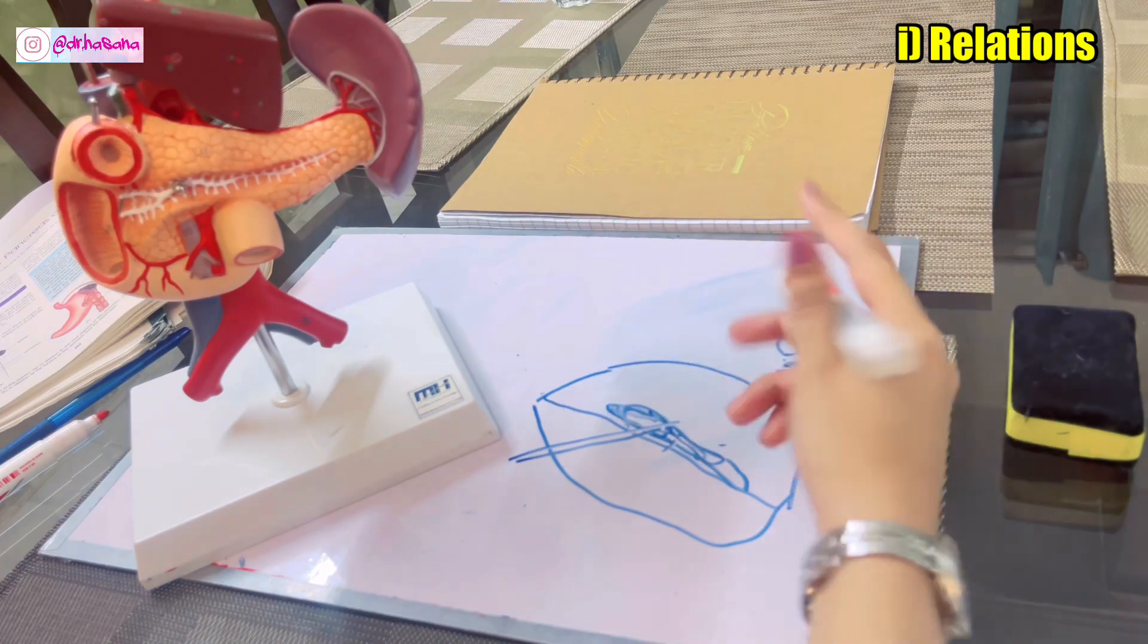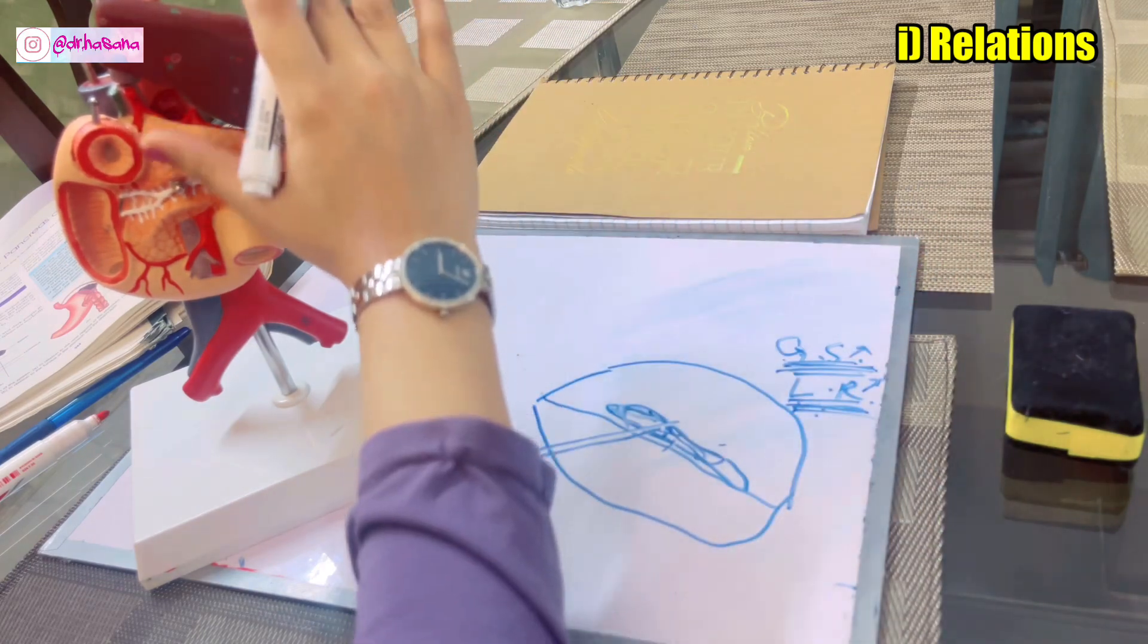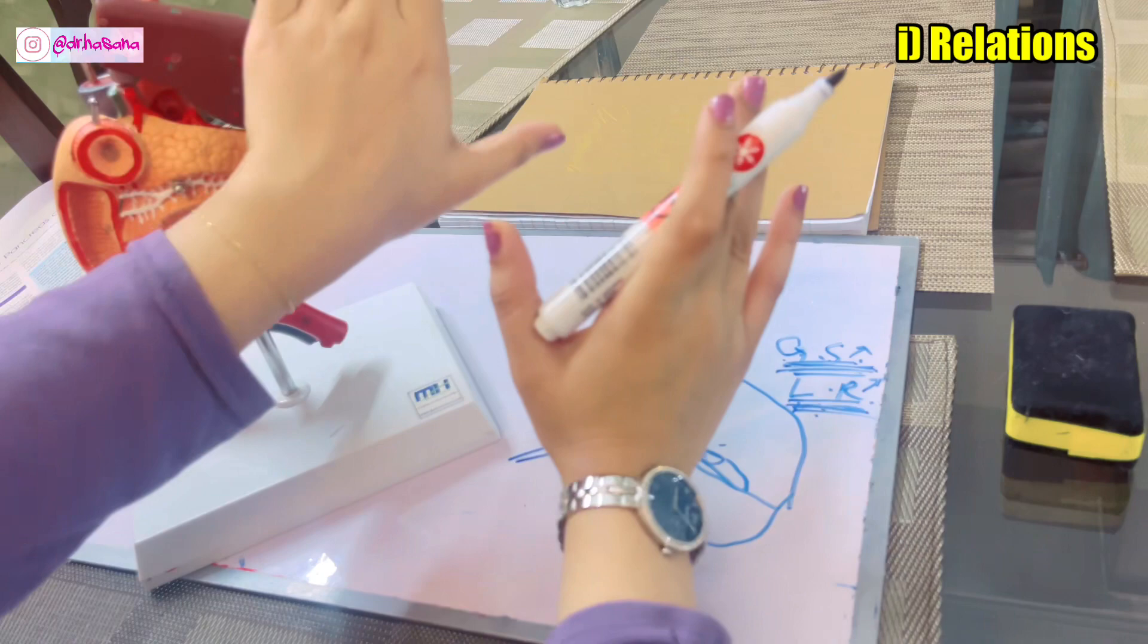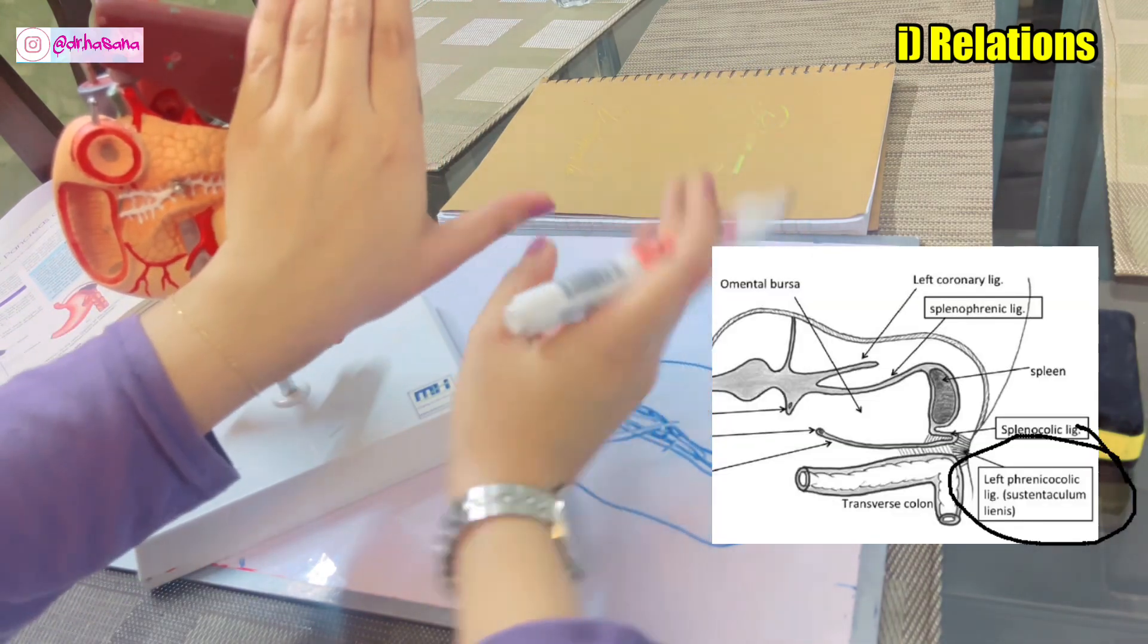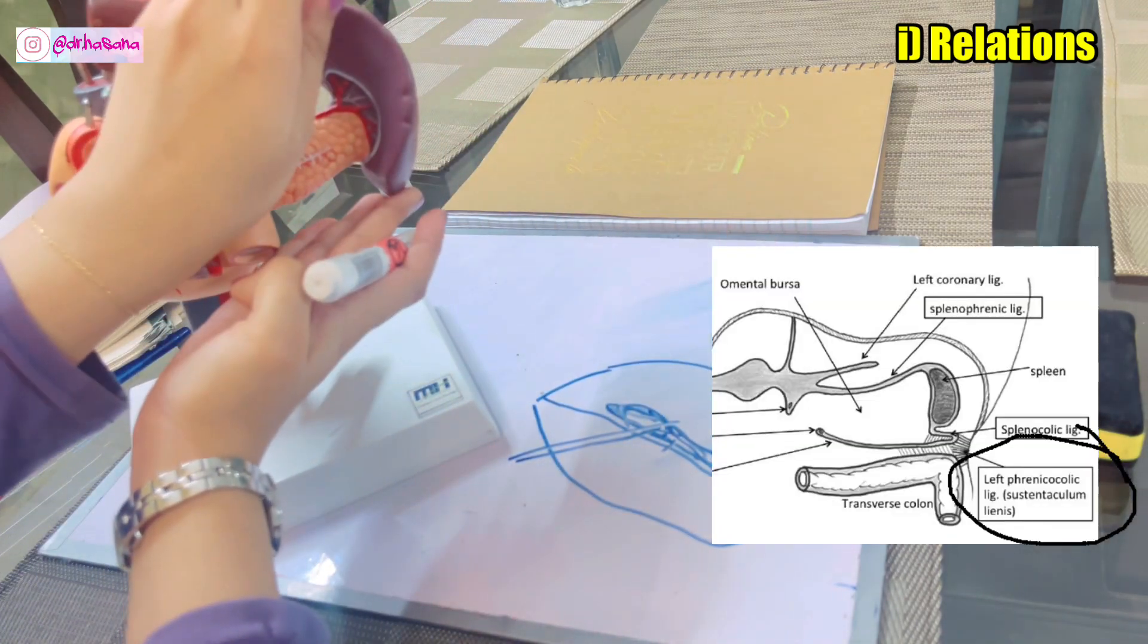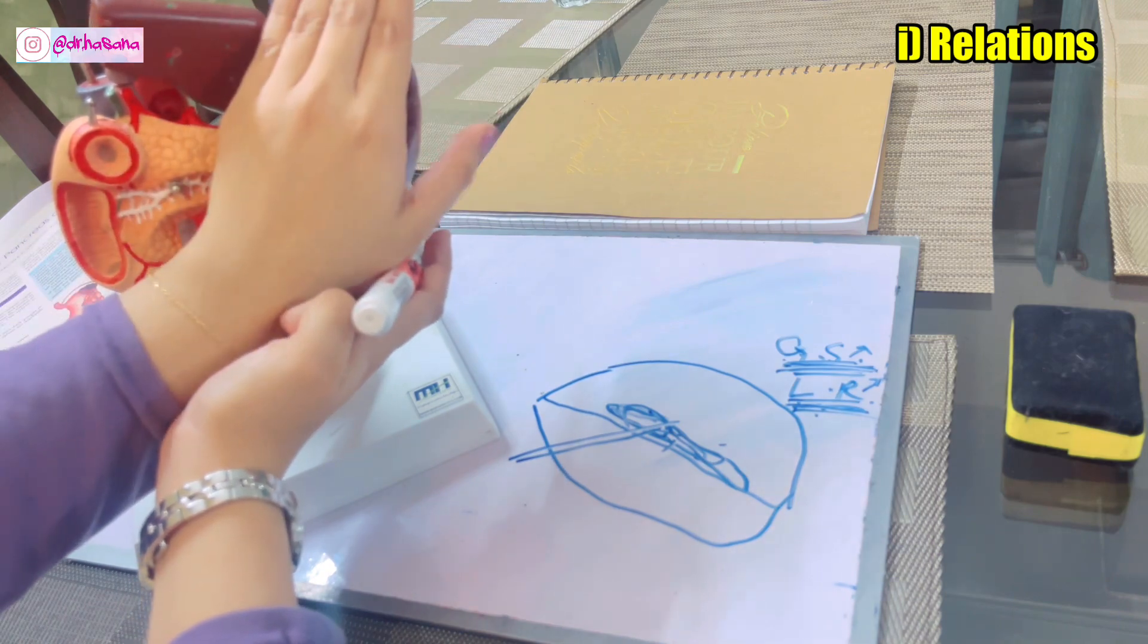There is another ligament called the phrenicocolic ligament that is not exactly attached to the spleen but it is on the anterior side of the spleen because it connects your diaphragm to the colon.